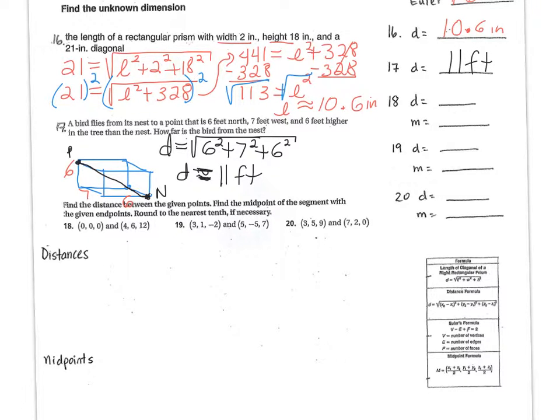Great. Now, number 18, 19, and 20, you have to find the distance and the midpoint. So for distance, we can use a formula for the distance, and it's three axes that we're working with. So for the distance, wouldn't it be x2 minus x1 squared plus? Right, I need to label my points x1, y1, z1, and then it's going to be x2, y2, and z2.